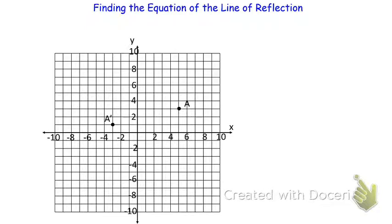To find the line of reflection, we'll start by connecting A to A'. Now let's look at the slope of this line segment. It has a rise of 2 and a horizontal run of 8. The midpoint in between A and A' would be half as much up and half as much over.